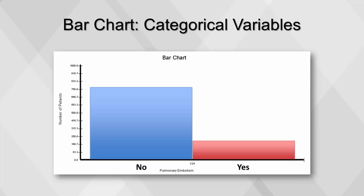This bar chart looks at the frequency distribution of patients with pulmonary embolism, which occurs when one or more arteries in the lungs get blocked by a blood clot. Notice that this is a binary variable with only two possible responses: yes and no.